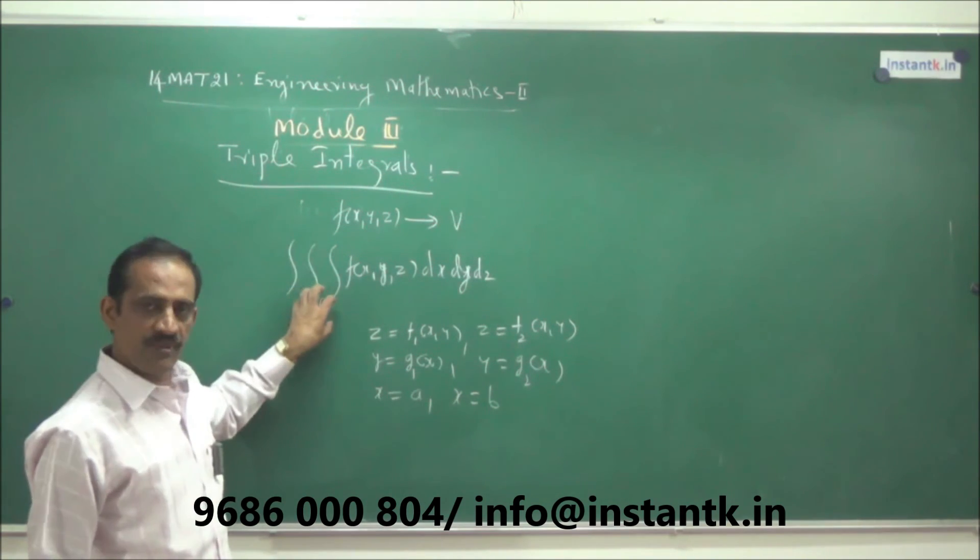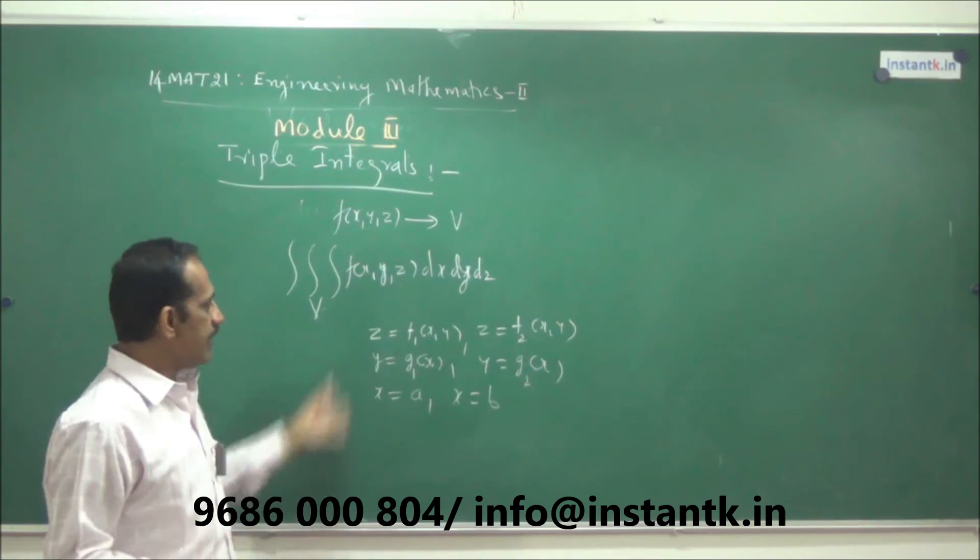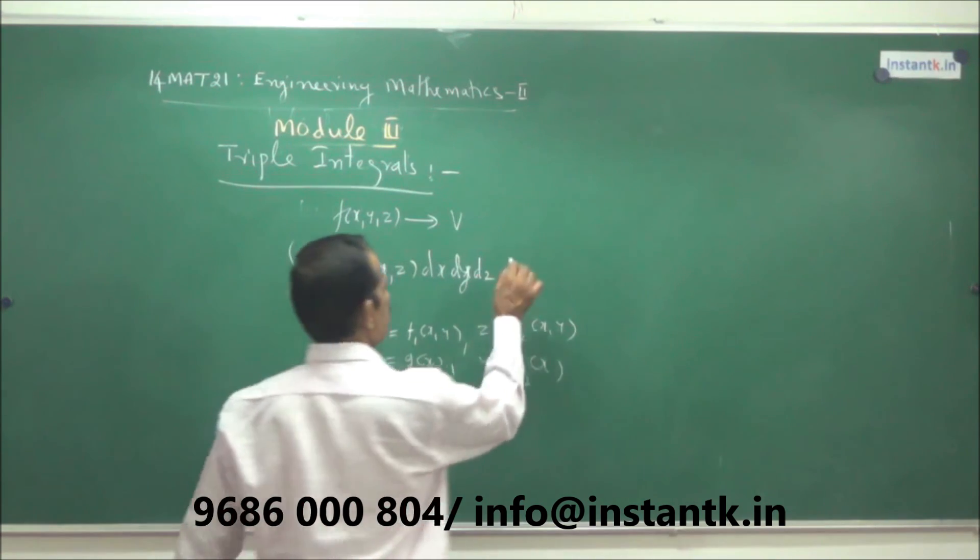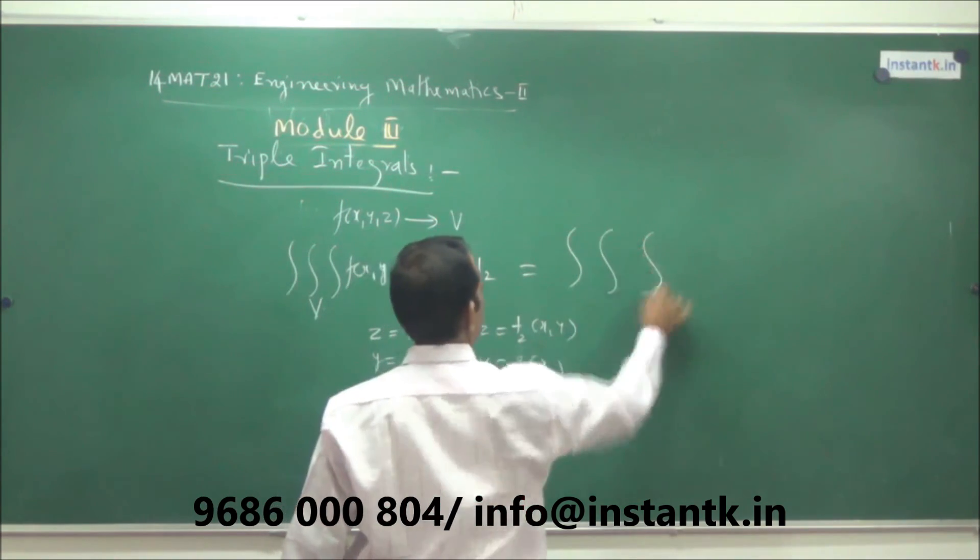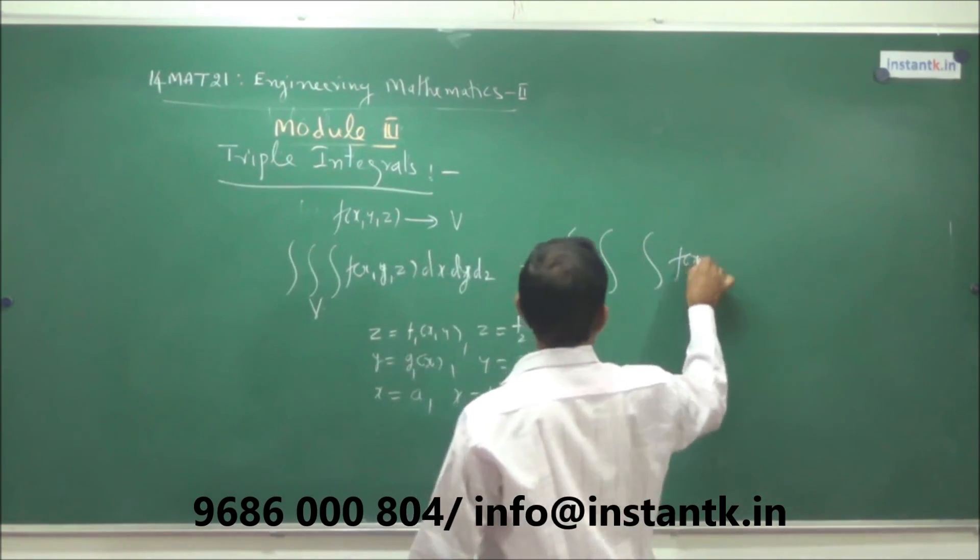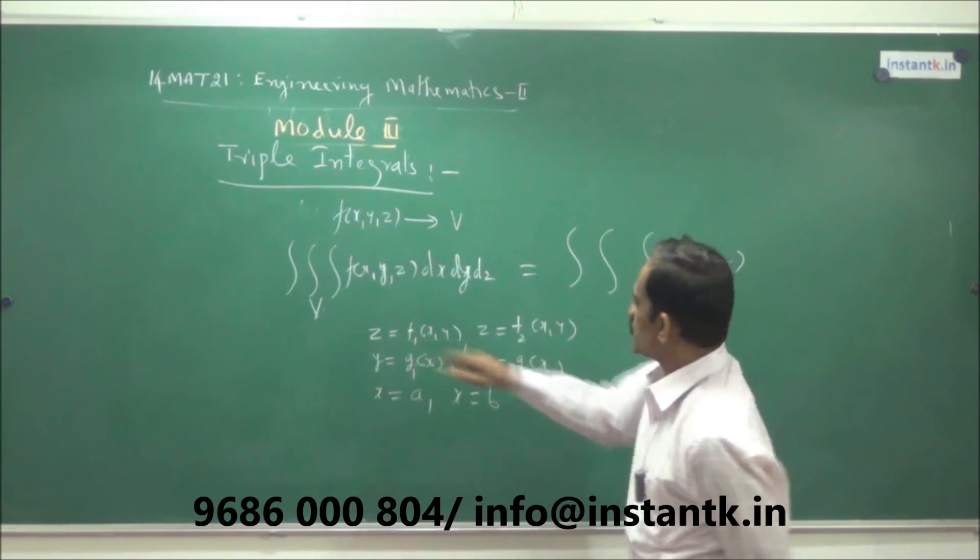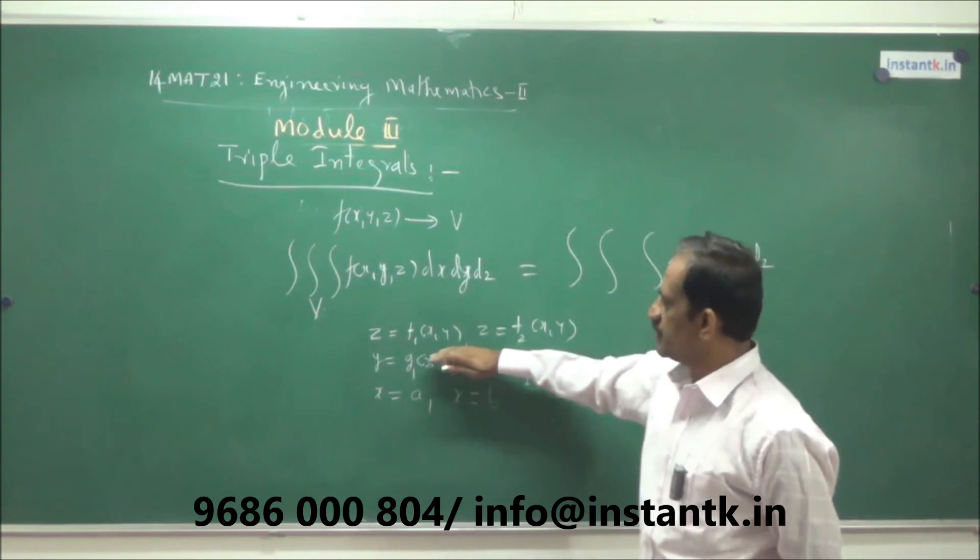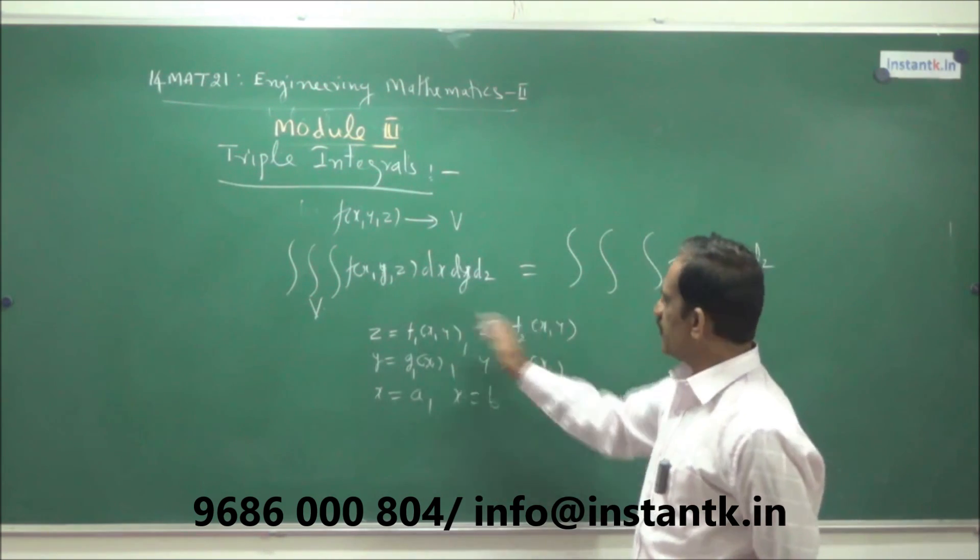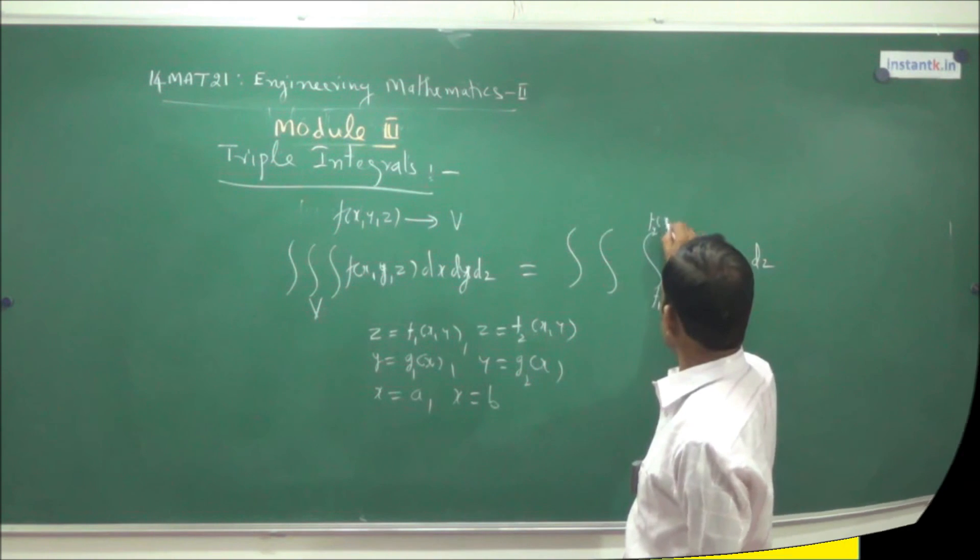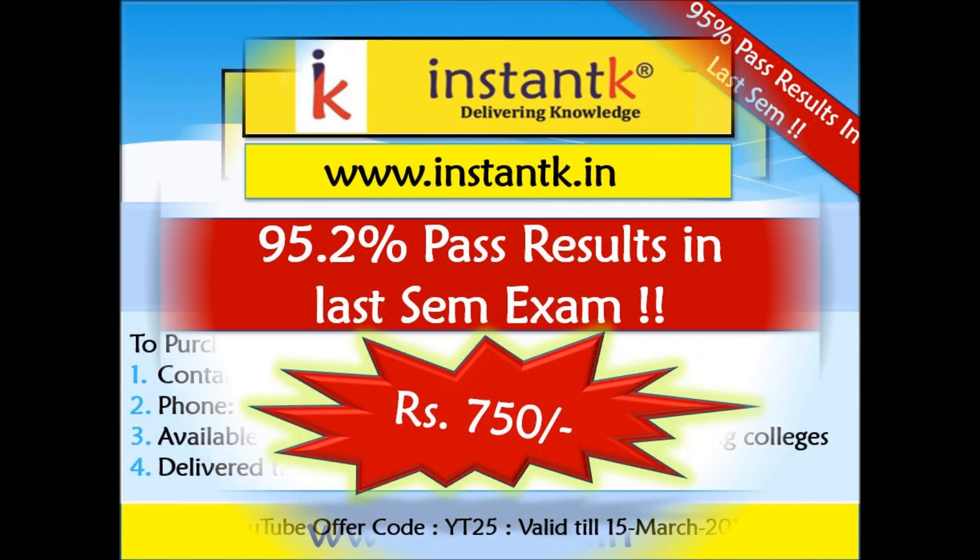So, if this volume v is bounded by this much surfaces, then, how to evaluate this triple integral? Means, we just evaluate like this, the triple integral. You take first f of x comma y comma z. First, you integrate with respect to z, where z varies between or between these two surfaces, z varies from some function of x and y to some other function of x and y. Z varies from x. So, this gives a function of x and y.